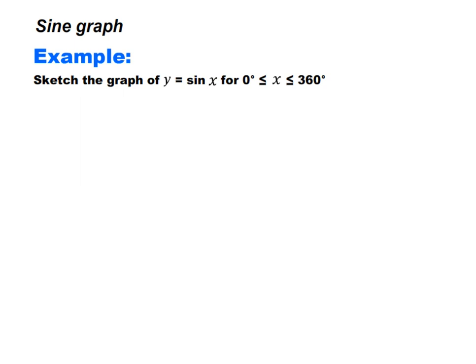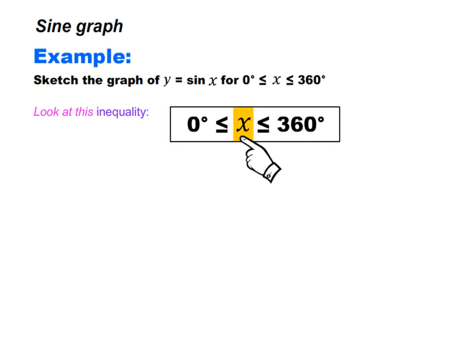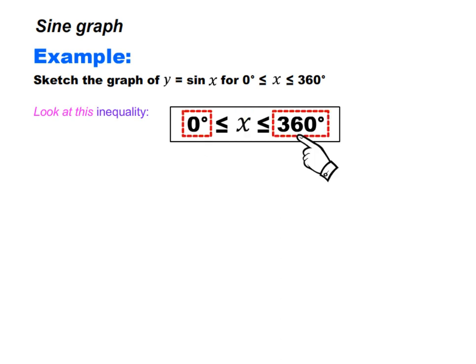Let's have a look at this example. We want to sketch the graph of y is equal to sin x, and we are given the interval from 0 degrees to 360 degrees. This inequality means our angle x is between 0 degrees and 360 degrees. Both 0 degrees and 360 degrees are included.